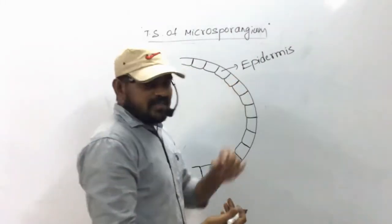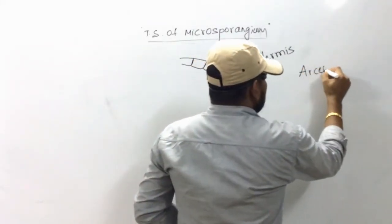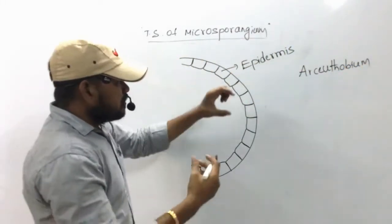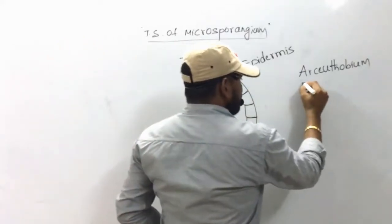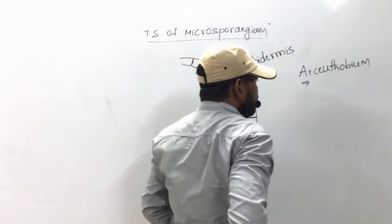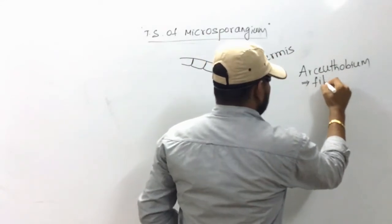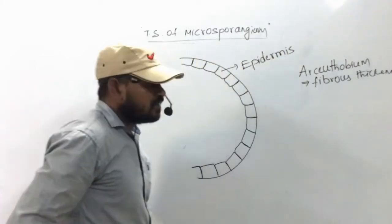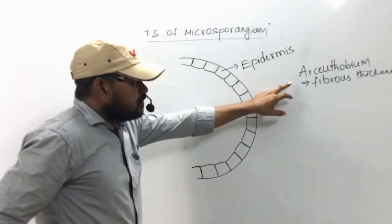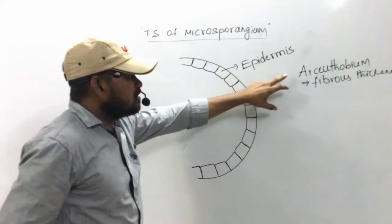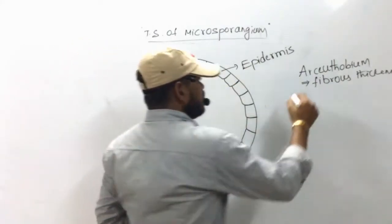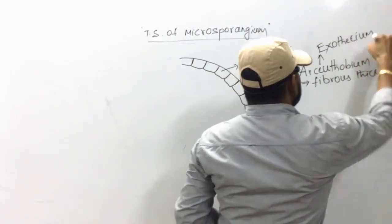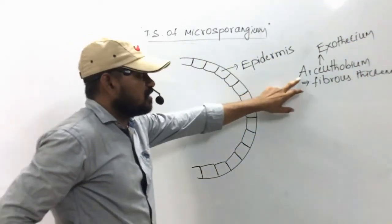In some plants like Orsithobium, the epidermal cells contain fibrous thickenings. Due to the presence of these fibrous thickenings, the epidermis of Orsithobium microsporangium is called exothesium.